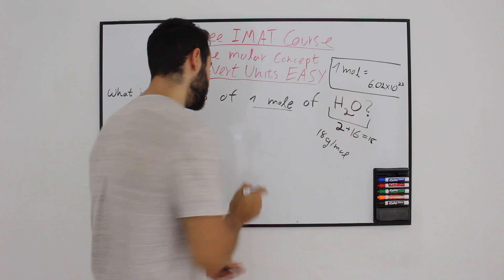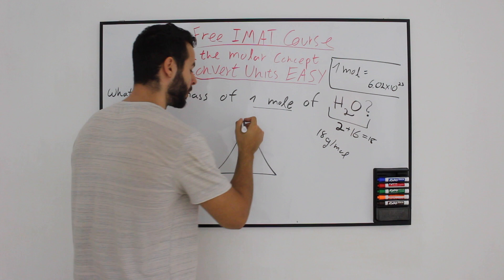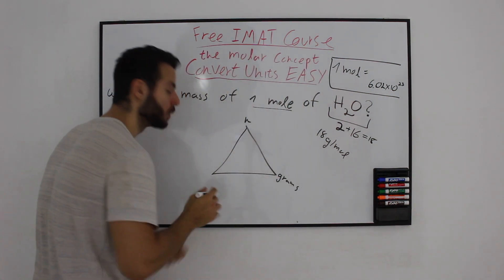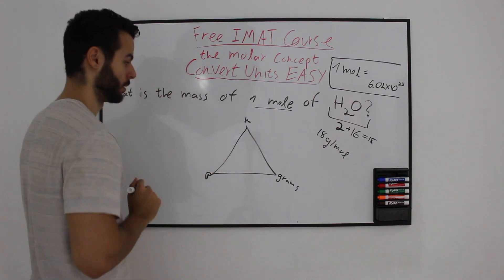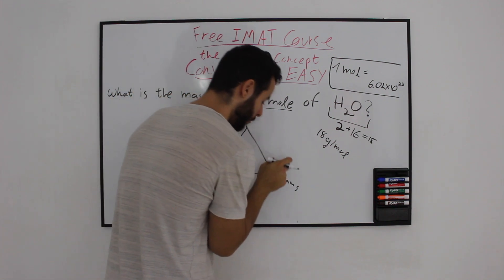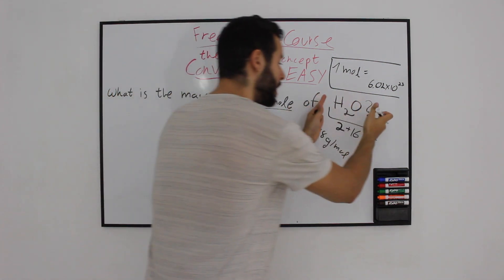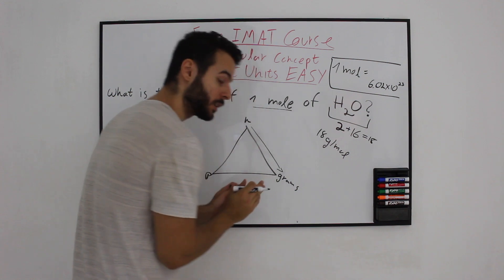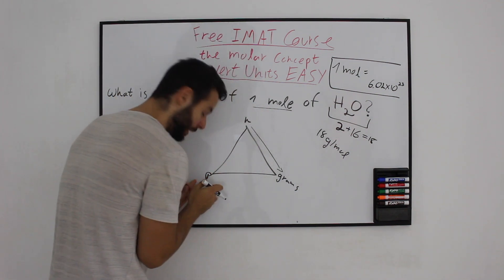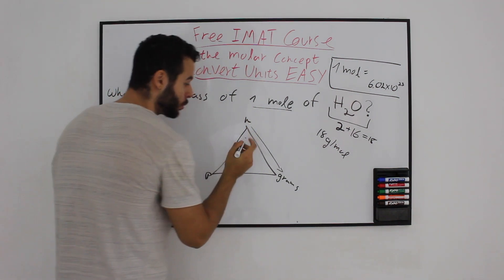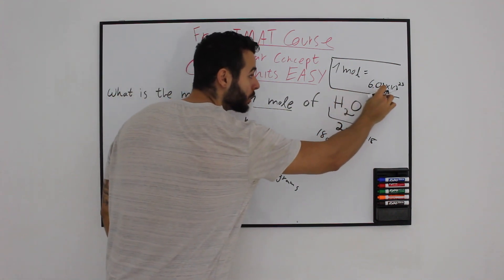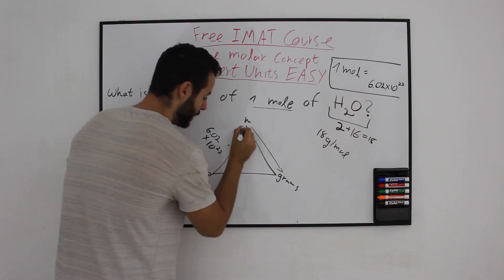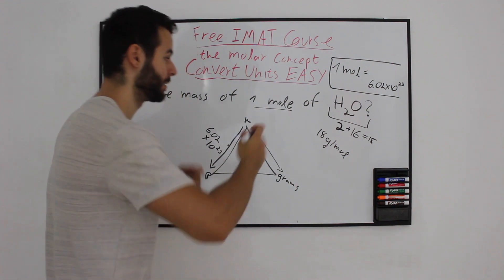To sum it up, you have this triangle. We have number of moles, abbreviated as n, number of grams, and number of particles, abbreviated as P. To go from number of moles to number of grams, calculate the molecular mass and multiply it by the number of moles. To go from number of moles to number of particles, take the number of moles and multiply it by 6.02 times 10 to the 23 — Avogadro's number — to get the number of particles.